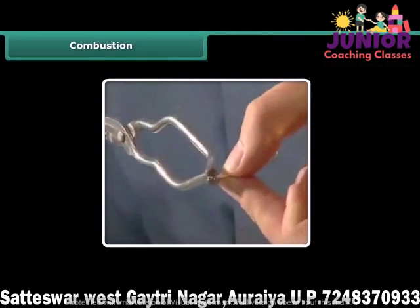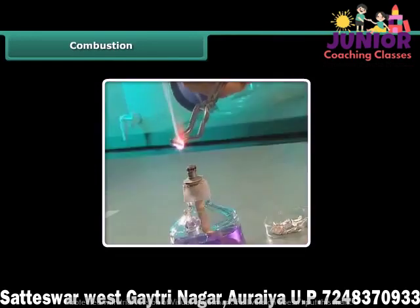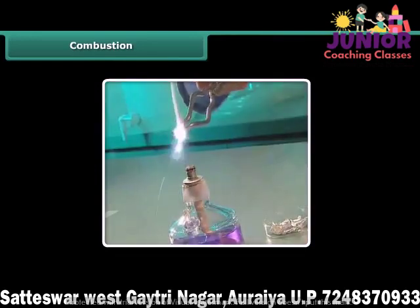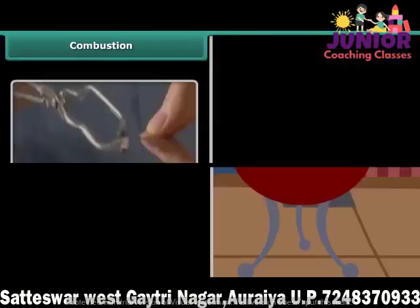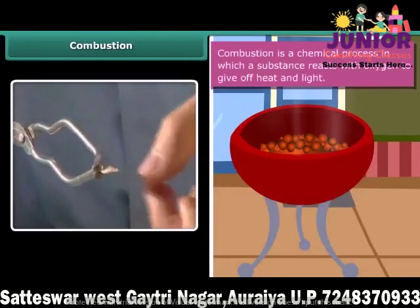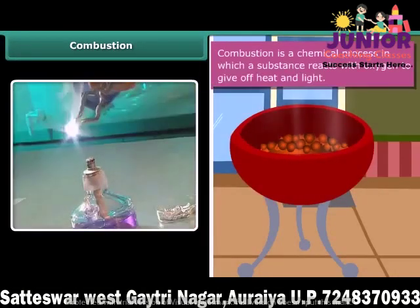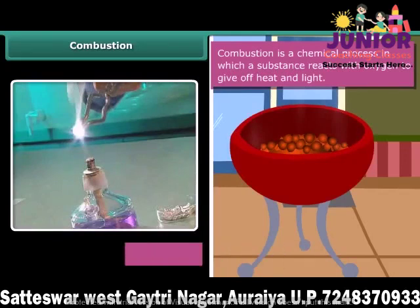Rohan is performing a simple activity. He is burning a magnesium wire on a flame. Notice carefully — heat and light are also produced along with magnesium oxide. Now look at the burning of coal. This burns in air producing carbon dioxide, heat and light. In both examples, the substances are reacting with the oxygen of the air to produce heat and light. This process is called combustion.